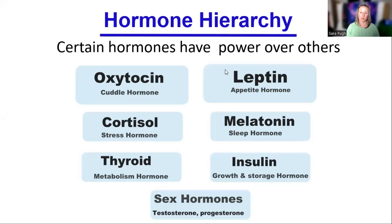Going back to the hormone hierarchy, we can see that melatonin, cortisol, and leptin are higher up than insulin. That's why not all women with polycystic ovary syndrome are insulin resistant, and not all men with low testosterone have got insulin resistance either. Sometimes there's something else going on further up. When somebody is leptin resistant, they become leptin resistant before they become insulin resistant. So there are people who have problems with leptin but don't have any problems with their insulin or blood sugar yet.